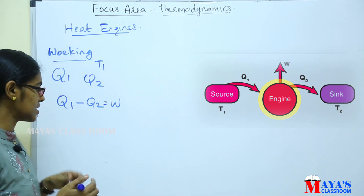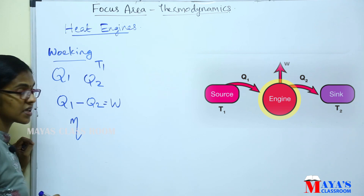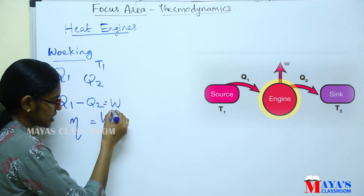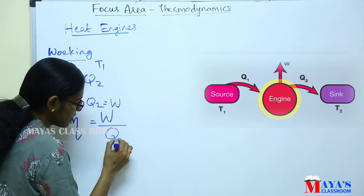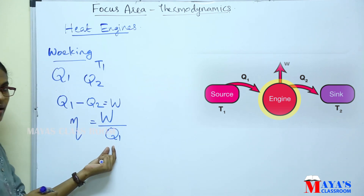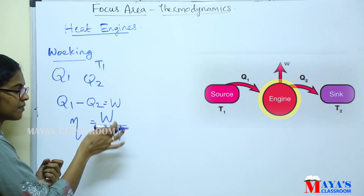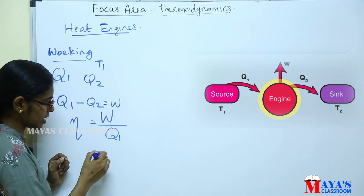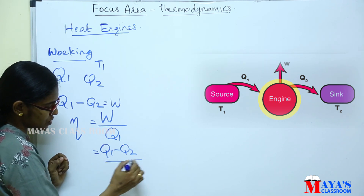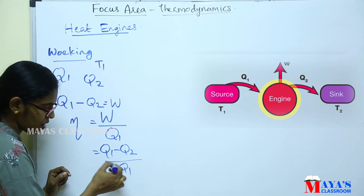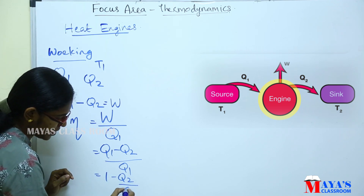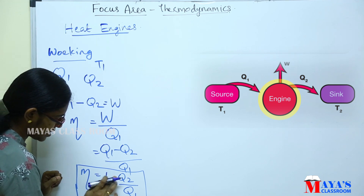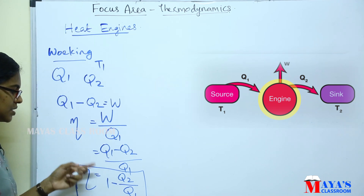Now, the efficiency of a heat engine. Efficiency can be defined as the ratio of the work output to the heat input. Work output divided by heat input — that is the efficiency. The efficiency of a heat engine is 1 minus Q2 divided by Q1. That is the efficiency of a heat engine.